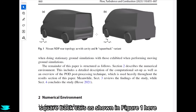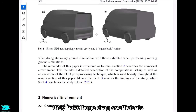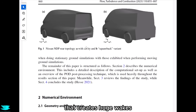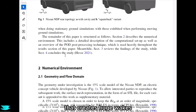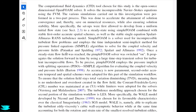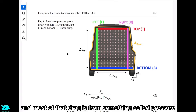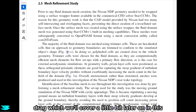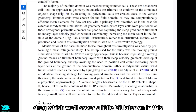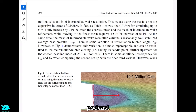Square back cars, as shown in figure 1, are some of the least aerodynamic cars. They have huge drag coefficients because their rears are just flat faces. That creates huge wakes, as we can see in figure 4, and hence a lot of drag. Most of that drag is from something called pressure drag, which we'll cover later in this podcast.